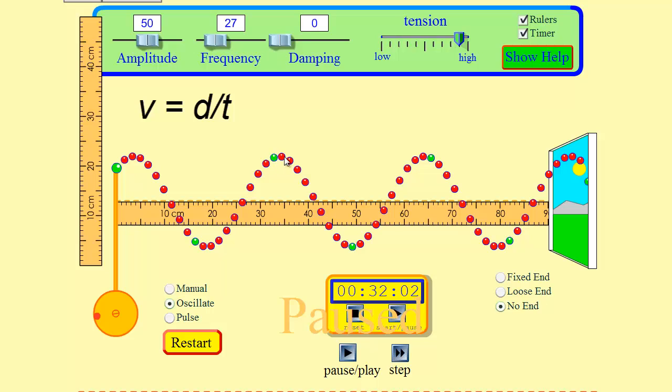We're going to use the distance from crest to crest or from trough to trough. Basically wherever the wave repeats itself we're going to use that distance. This is known as the wavelength.